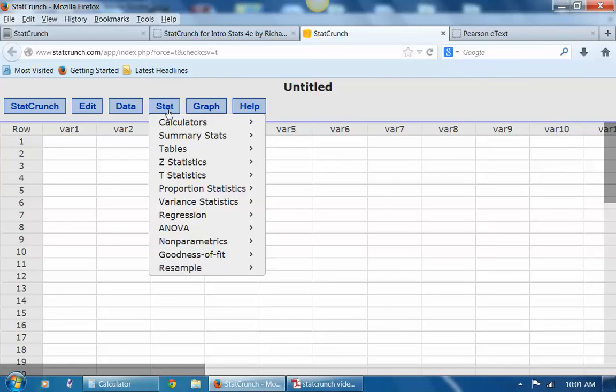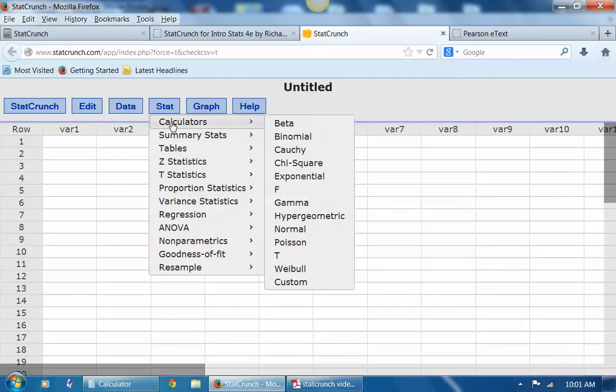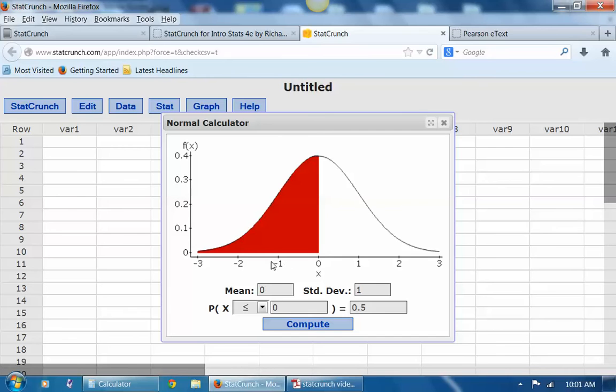So if you go to Stat, and then go to calculators, we're going to use a normal calculator. What you do here is put in the mean and the standard deviation, and then you can find areas under the curve, or you can see where different values would fall. So let's put in the mean speed for these cars, which was 23.84 in this gentleman's sample, and the standard deviation was 3.56.